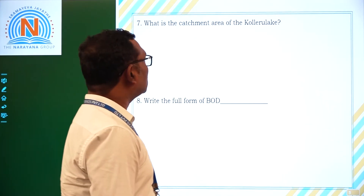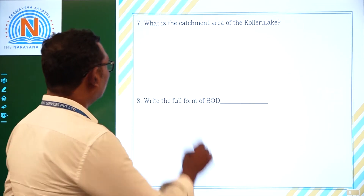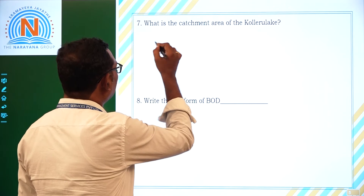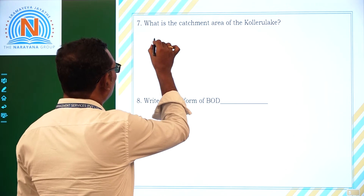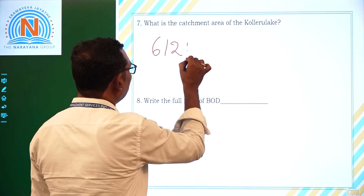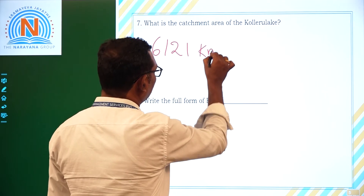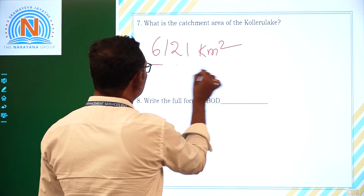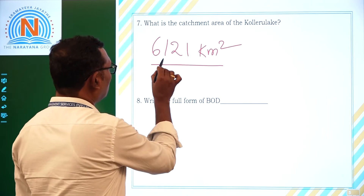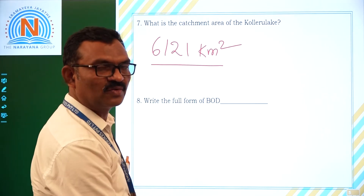What is the catchment area of Collier Lake? Collier Lake extends over an area of about 6,121 square kilometers.